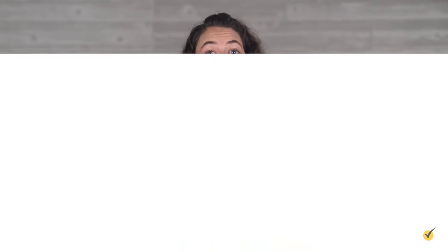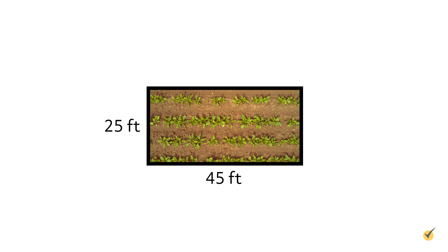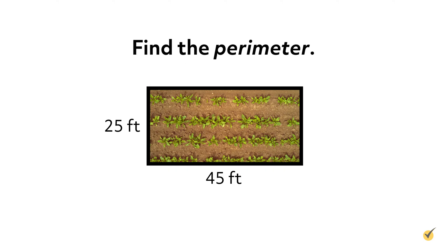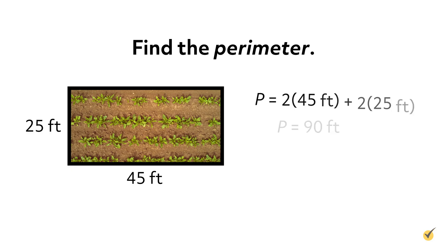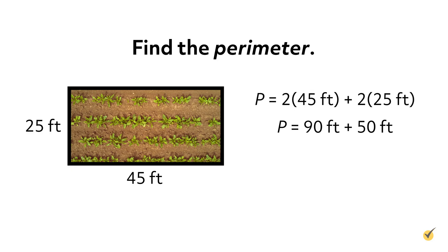Now it's your turn. Suppose you have a rectangular garden plot 45 feet long and 25 feet wide. What is its perimeter? Remember to state the units of your answer. Pause the video now while you work out your solution, then press play to compare your answer to mine. 2 times the 45 foot length is 90 feet and 2 times the 25 foot width is 50 feet. We add 90 feet and 50 feet to get 140 feet for the perimeter of the garden plot.